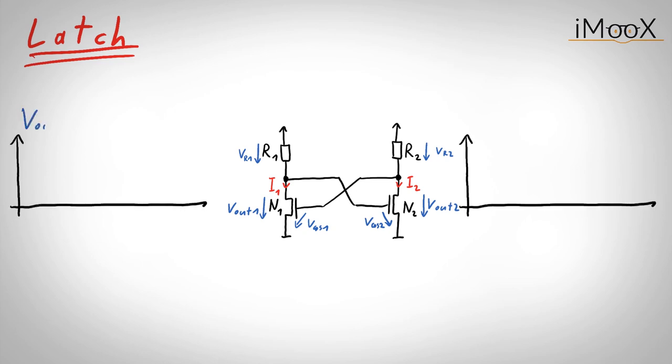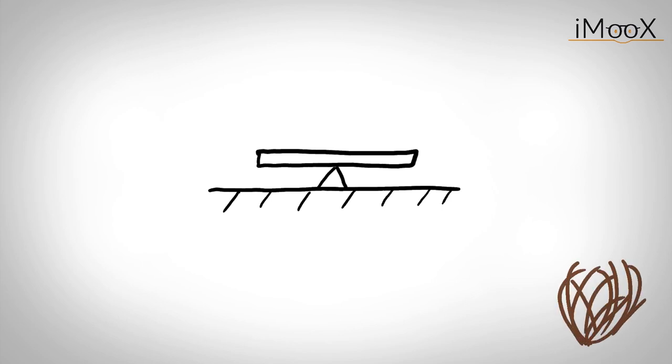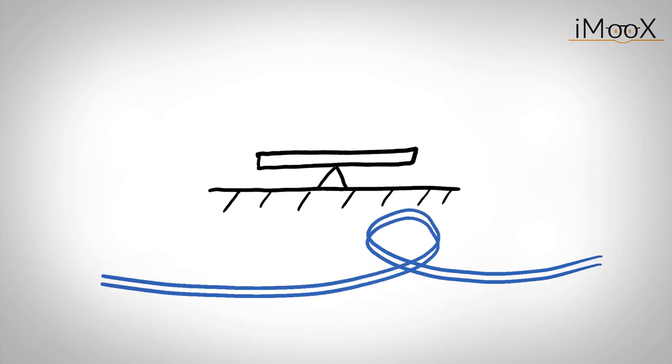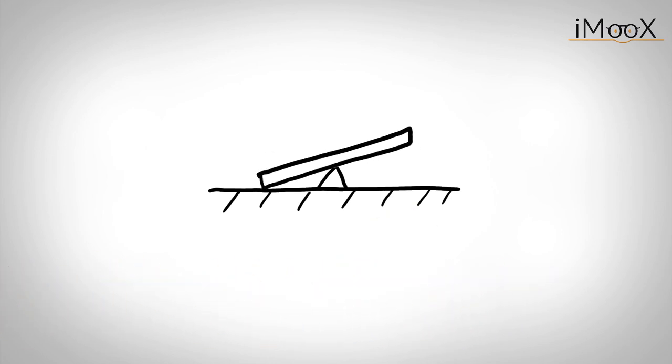Finally, the latch will flip and fall either to one side or to the other, due to the cross-coupled transistor pair. We can conclude that the circuit has three equilibrium points, whereas the center point is not stable. You can compare it with a seesaw. A seesaw also has three equilibrium points, whereas the balanced point is unstable. As soon as there is a small disturbance, let us say it's windy, the seesaw will fall into one of the other stable equilibrium points.